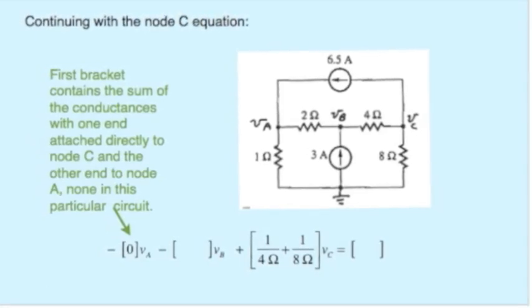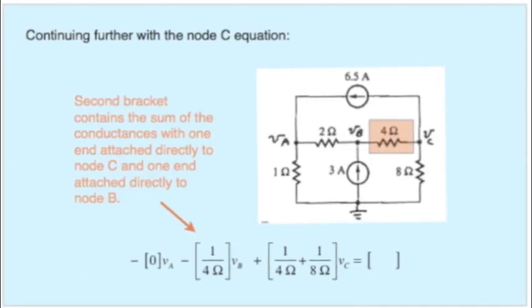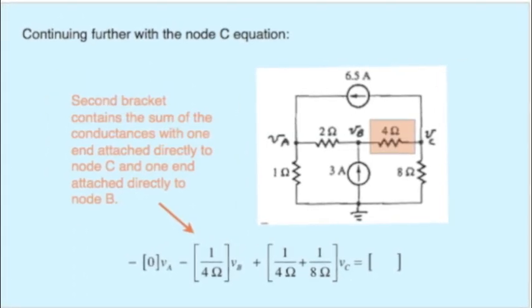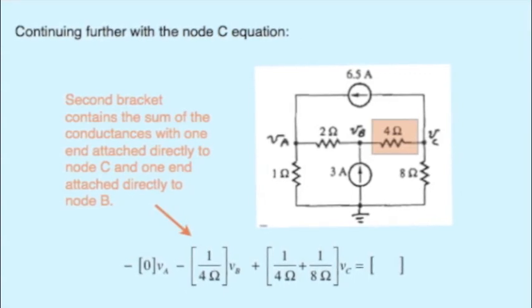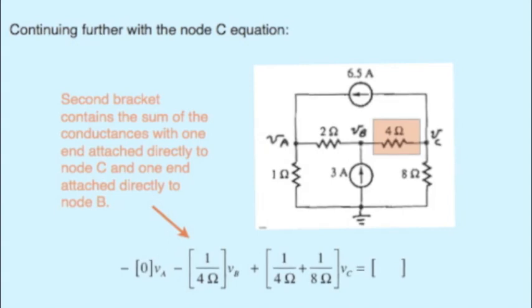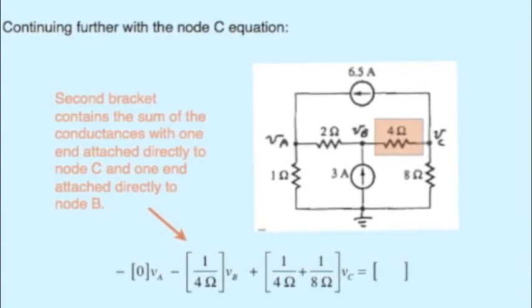There are none. Hence we enter a zero in our equation. There is a resistor that has one end on node B and the other end on node C, the 4 ohm resistor, and that will give us the term that goes in front of the V sub B. In this case, 1 over 4 ohms.